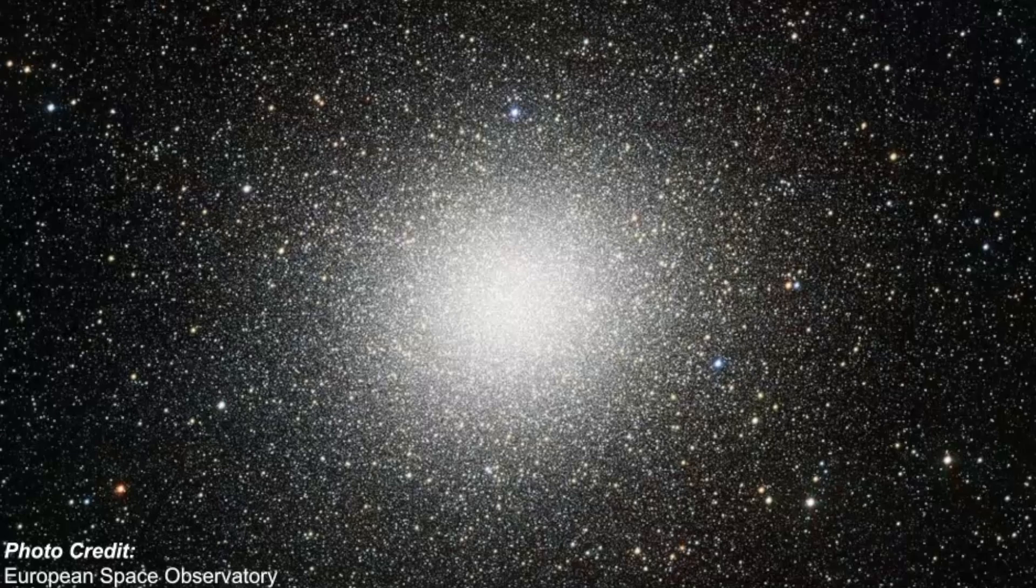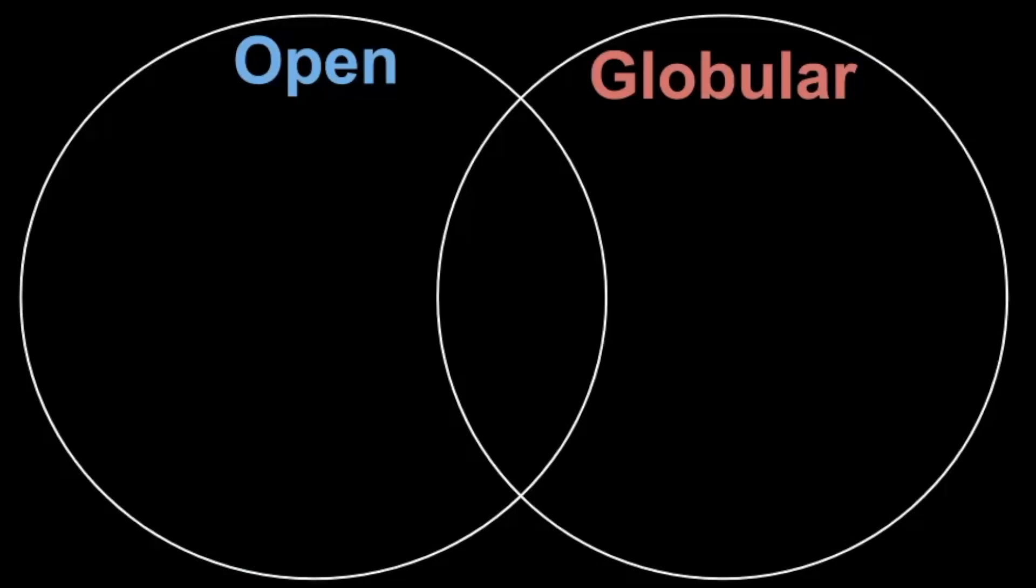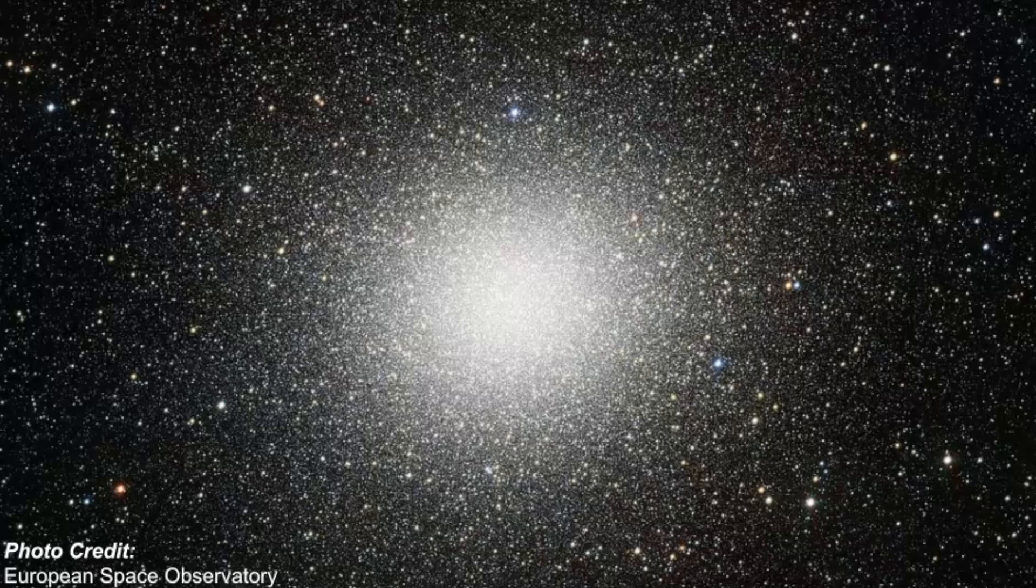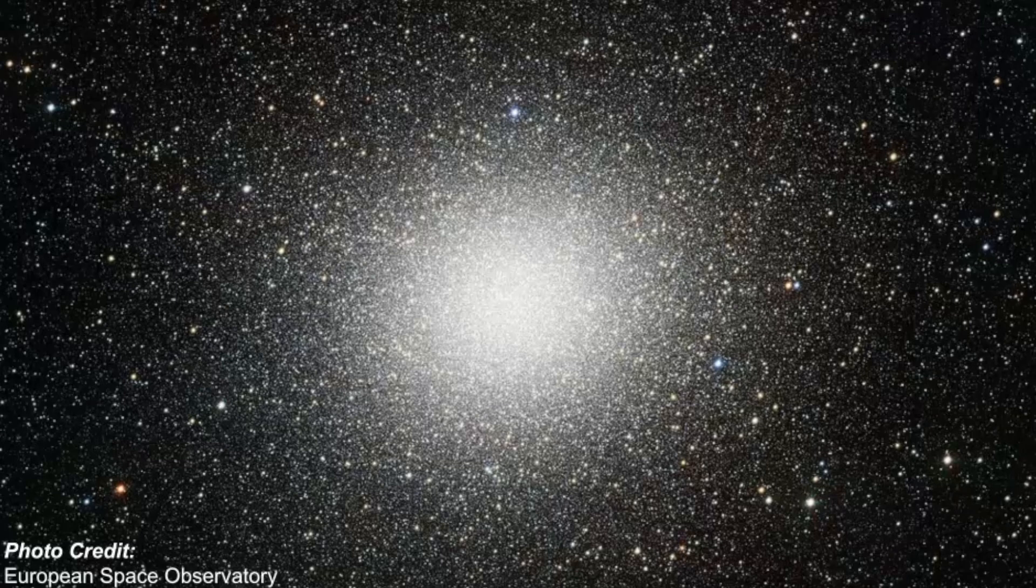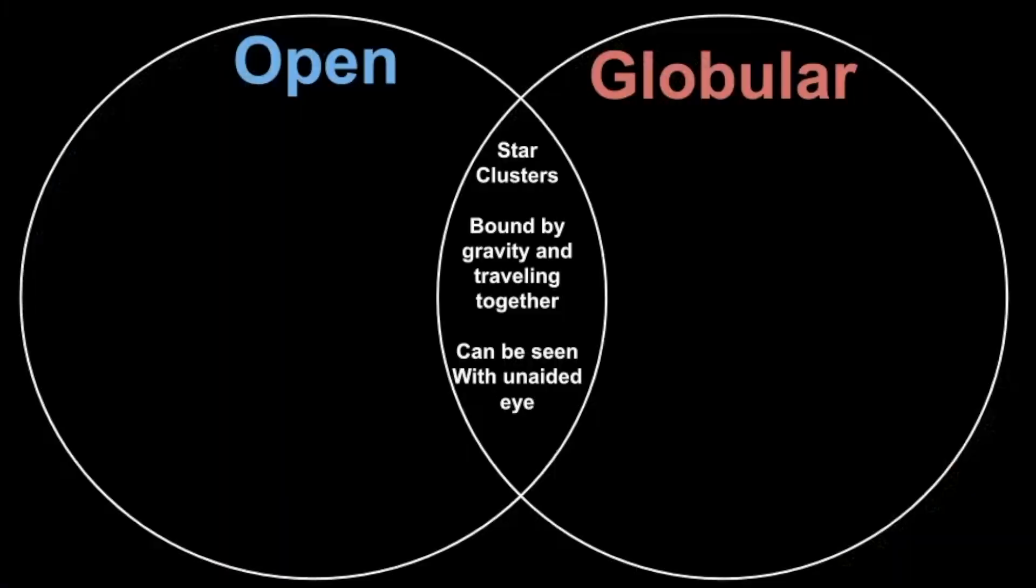So let's wrap this video up by going over our Venn diagram, which we look at the similarities and differences between these two. I always do this practice for my versus video. So first, they're both star clusters. They are both groups of stars that are bound by gravity, and they're also traveling together. And they can be seen with the unaided eye. Except when you get these fantastic pictures, that's not something, you need an expert telescope to capture something like this. So definitely need equipment there. So that's how they're similar.